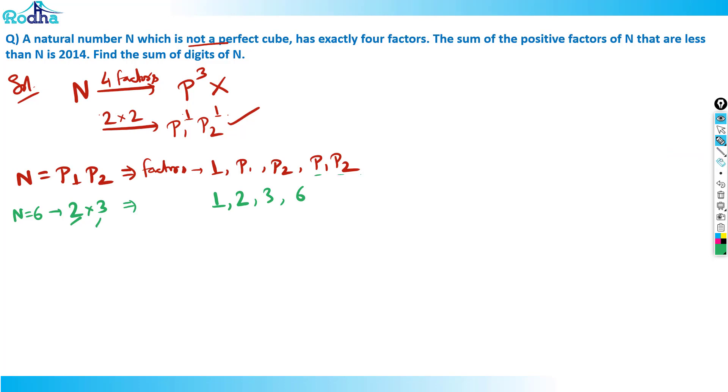So any number in p1 times p2 form has factors: one, p1, p2, and p1 times p2. For N equals six, the factors are one, p1, p2, and p1 p2.